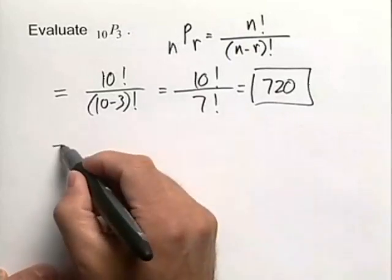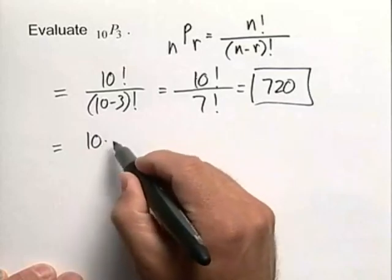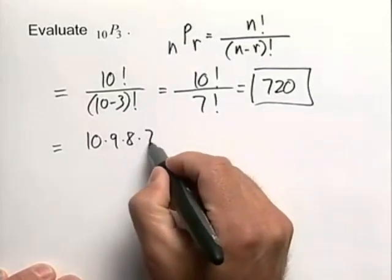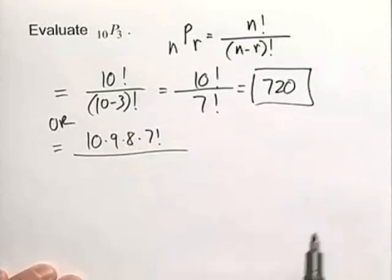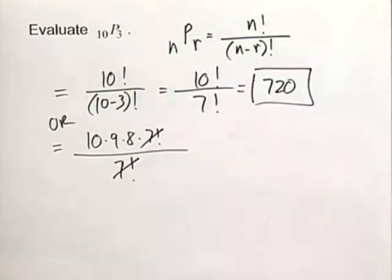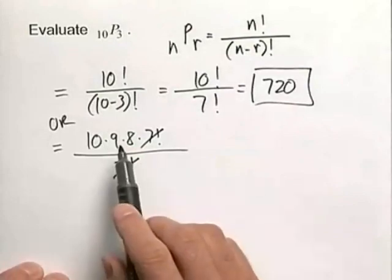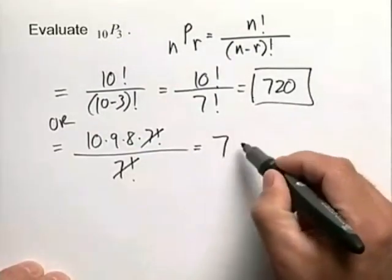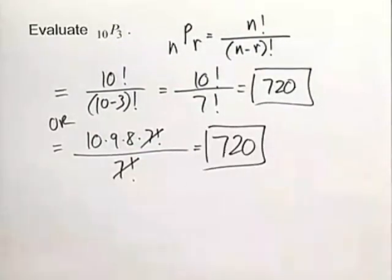Now if you want to work it by hand, we have 10 times 9 times 8 times 7 factorial on the top, just working it out by hand, all over 7 factorial. And we can just simply cancel the 7 factorials. 10 times 9 times 8 will once again give us the value of 720.